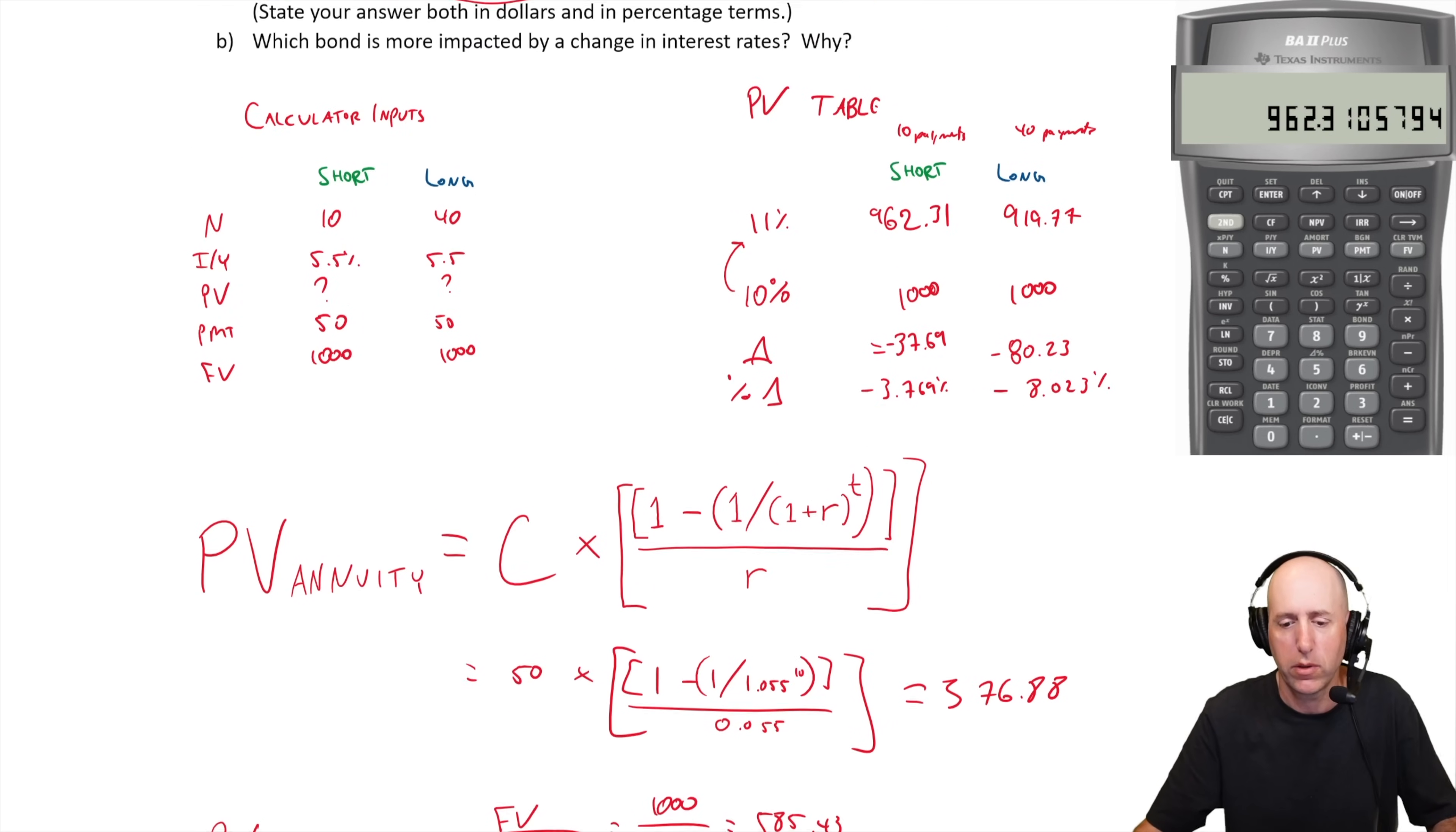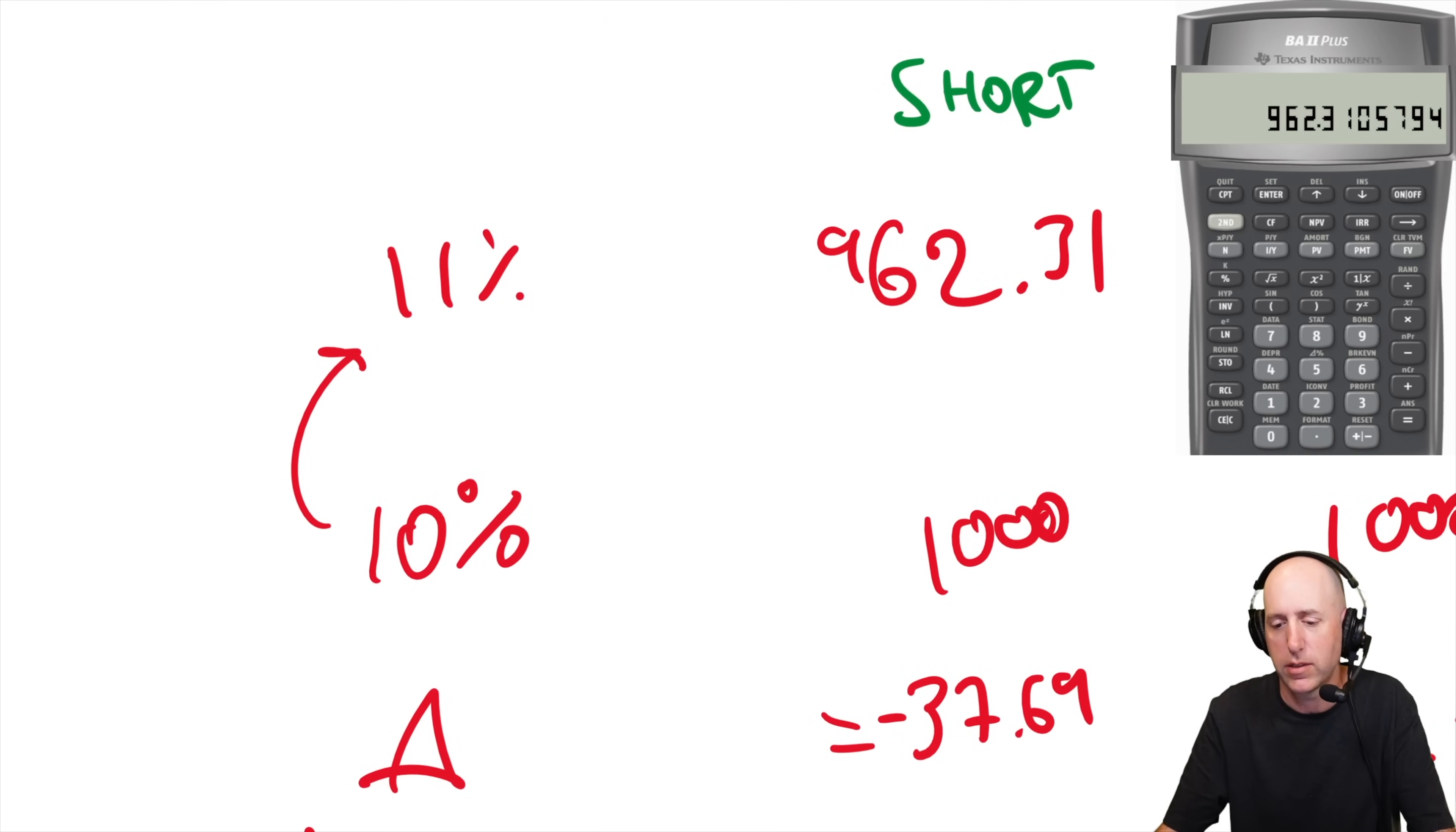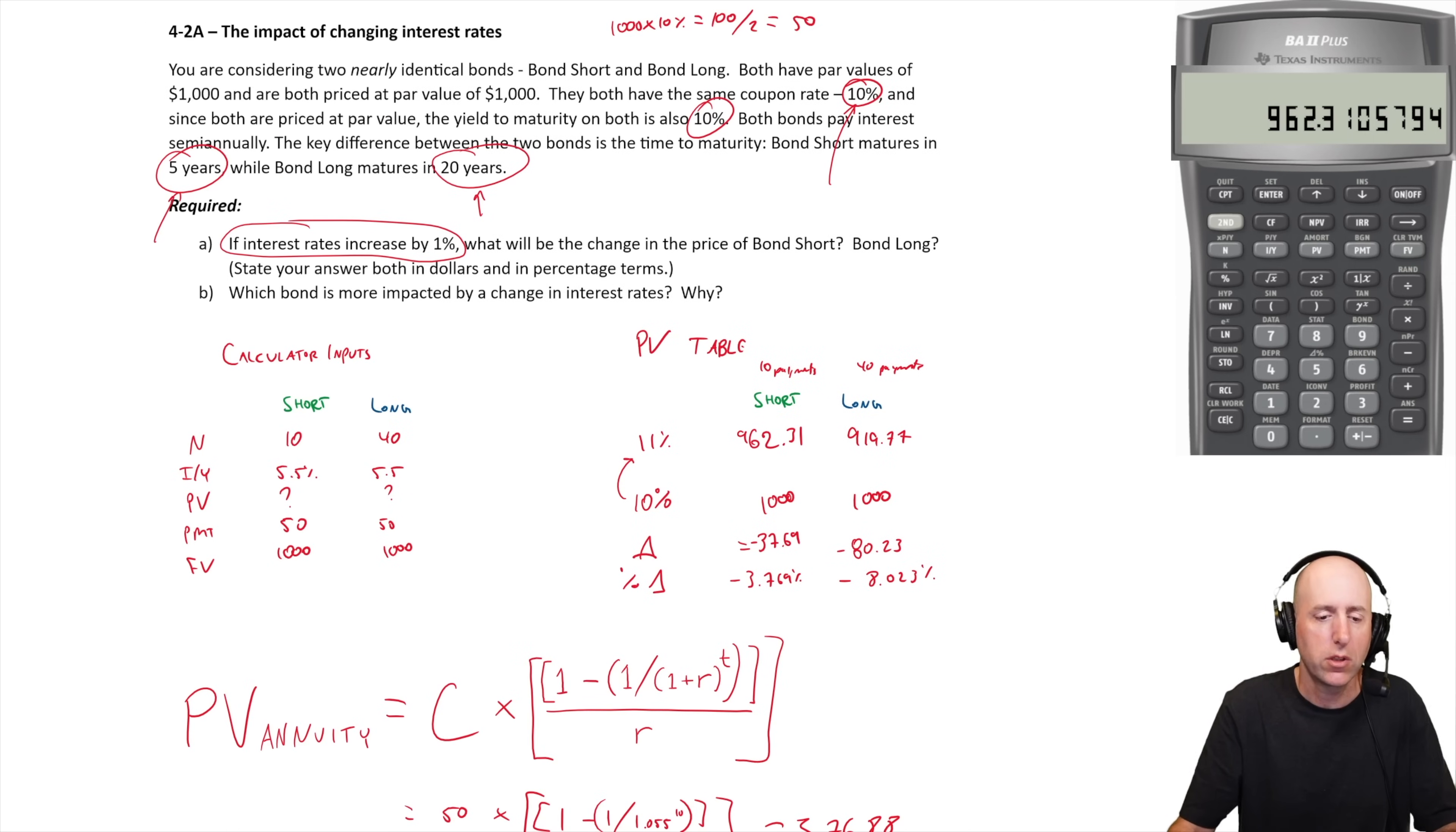And I get 962.31, and that's exactly what we got from our financial calculator, 962.31. So you could do this both ways. It wouldn't be that complicated. Once you sort of figure out what it's talking about.